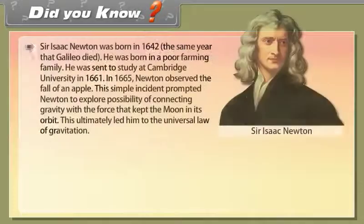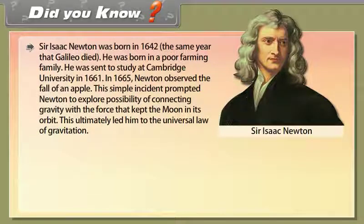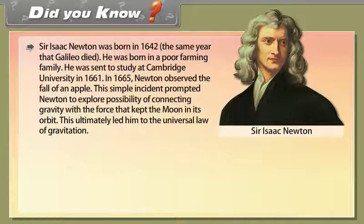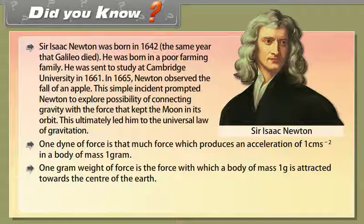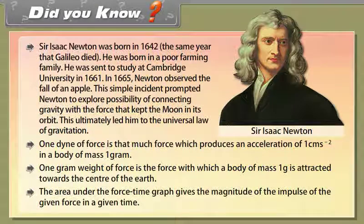Did you know: Sir Isaac Newton was born in 1642, the same year that Galileo died. He was born in a poor farming family and was sent to study at Cambridge University in 1661. In 1665, Newton observed the fall of an apple, which prompted him to explore the connection between gravity and the force keeping the moon in its orbit, ultimately leading to the universal law of gravitation. One dyne of force produces an acceleration of 1 cm/s² in a body of mass 1 gram. One gram-weight of force is the force with which a body of mass 1 gram is attracted towards the center of the earth. The area under the force-time graph gives the magnitude of impulse.